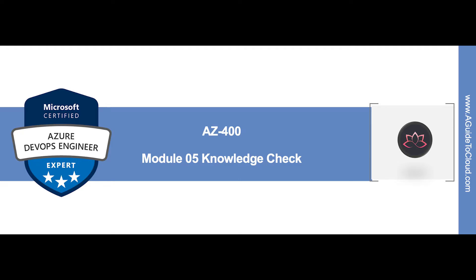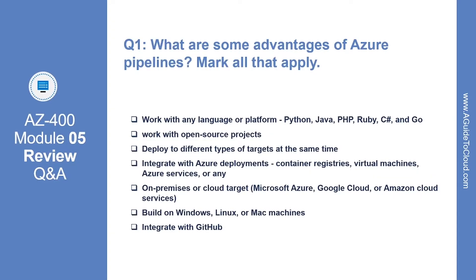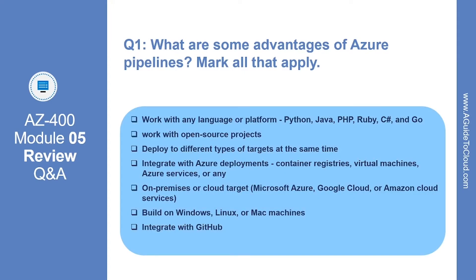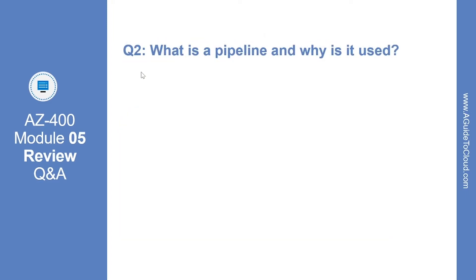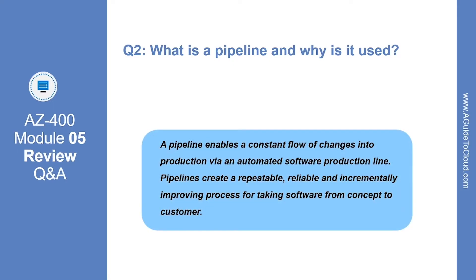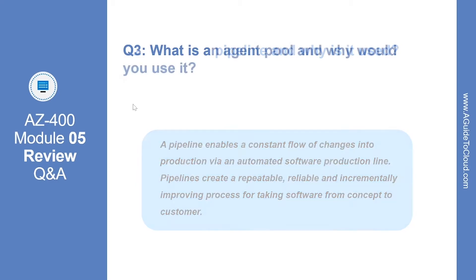In this section we are going to go through Module 5 review questions and answers. Question 1: what are some of the advantages of Azure Pipeline? The correct answer is all of the options mentioned. Azure Pipeline can work with any platform including Python, Java, PHP, Ruby, C#, and Go; it can work with open source projects; you can deploy to different types of targets at the same time; it integrates with Azure deployments and is built on Windows, Linux, and Mac machines, and integrates with GitHub. Question 2: what is a pipeline and why is it used? A pipeline enables a constant flow of changes into production via an automated software production line, creating a repeatable, reliable, and incrementally improving process for taking software from concept to customer.